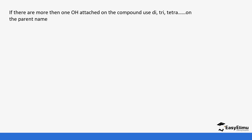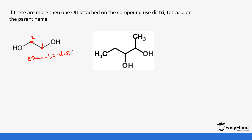The final rule is: if you have more than one OH, you use di-, tri-, tetra- at the end. For example, this structure has two carbons — so it's an ethane — but we have two OH groups: one at carbon one and one at carbon two, so it becomes ethan-1,2-diol, just like we were doing with di- in alkenes and alkynes. Then we have this one: carbon one, two, three, four, five — it's a pentan — so it becomes pentan-2,3-diol.